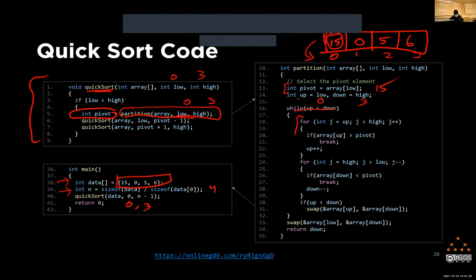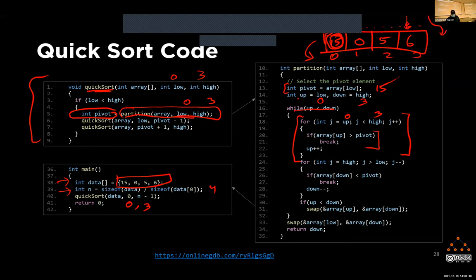The first loop runs from 'up' (which is 0) to 'high' (which is 3), checking if the element at 'up' is greater than the pivot. Since 15 is the pivot and no other elements are greater than it, this entire loop will execute and 'up' will end up pointing near the last location. Then the second loop starts from 'high' going backward to 'low', decrementing, looking for the first element smaller than the pivot.